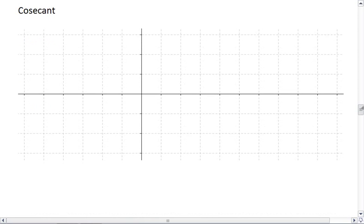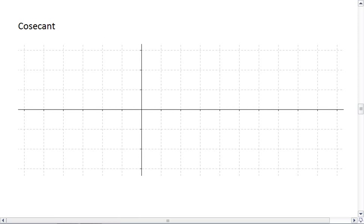Let's now finally look at cosecant and secant. Remember cosecant is 1 over sine. Remember sine looks like this.